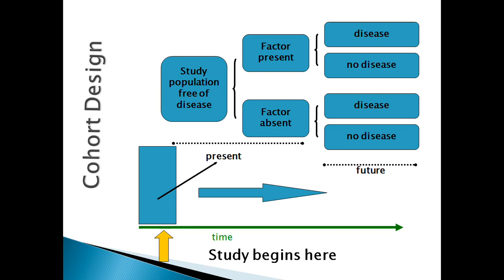In cohort study, the study goes into the future. It is a forward-looking or prospective study. At the beginning there will not be any cases. It is time-consuming and very difficult to follow up because we need to maintain follow-up of participants over time. This is the basic design difference between case-control and cohort study.